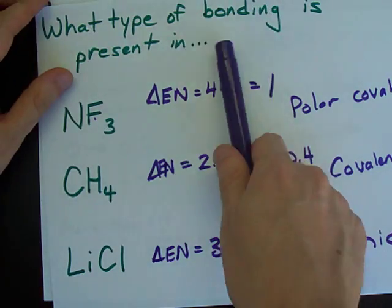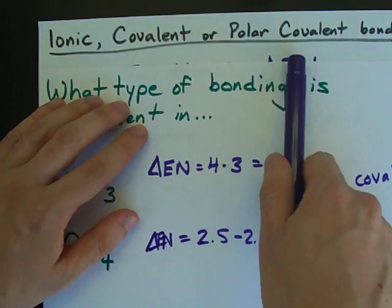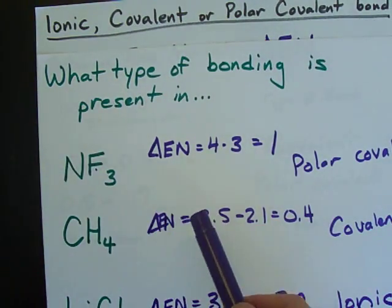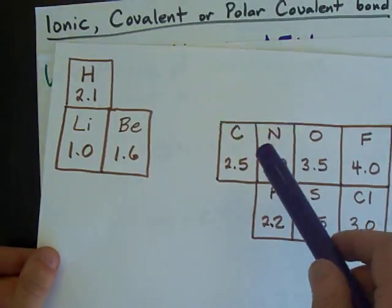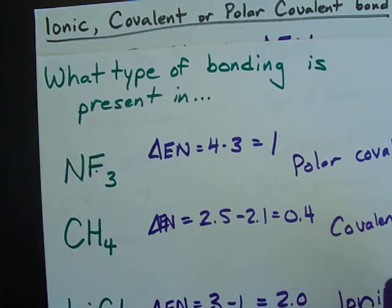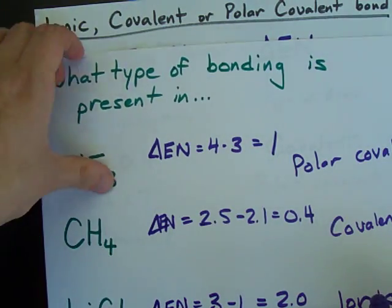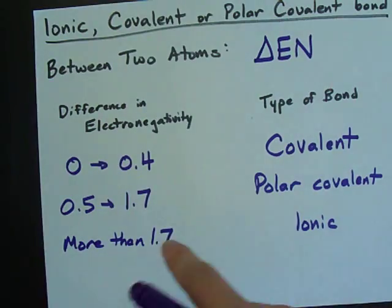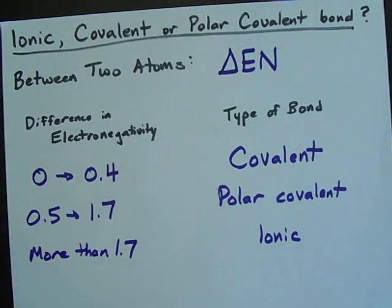In summary, to figure out what type of bonding is present between your two atoms, find the difference in electronegativity and then use this chart here to figure out what kind of bond you actually have. Best of luck.